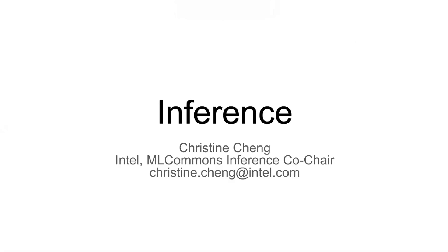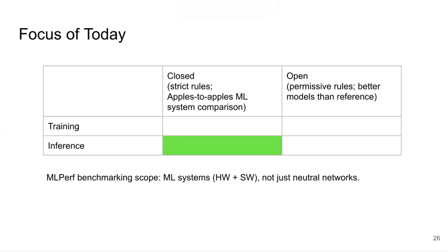Thanks Peter for the introduction. On the inference side we have very similar practices but focused on inference. As Peter mentioned, we have closed divisions with strict rules focused on apple-to-apple ML system comparison, and we also have an open division with more permissive rules. Today's talk is mostly focused on closed division inference, and you can read about the open division in our GitHub rules.